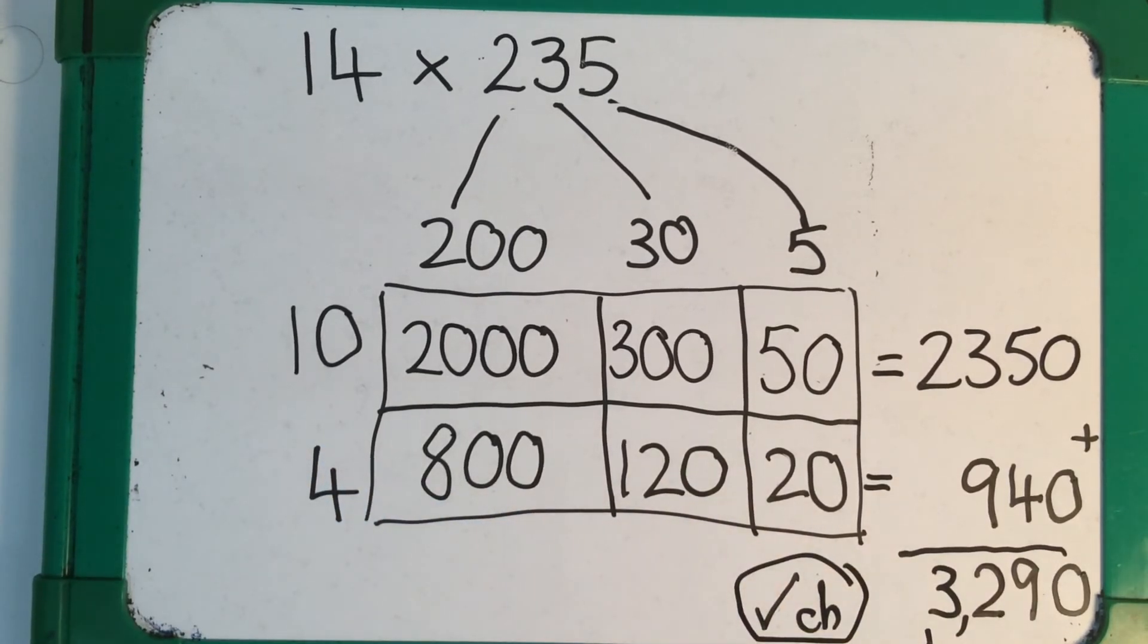And that's how you use the grid method to multiply a two digit number by a three digit number.